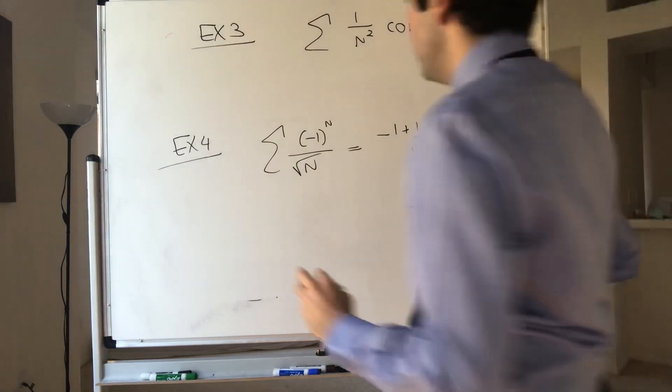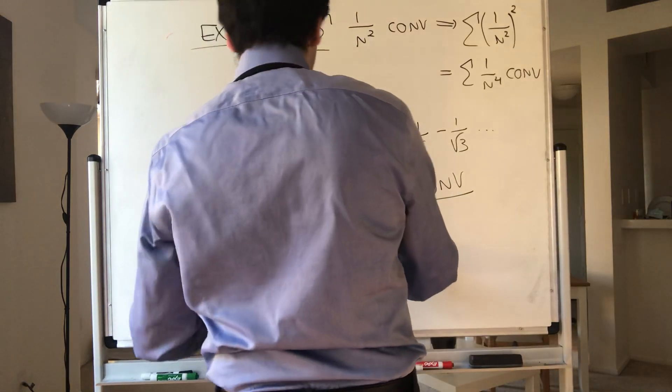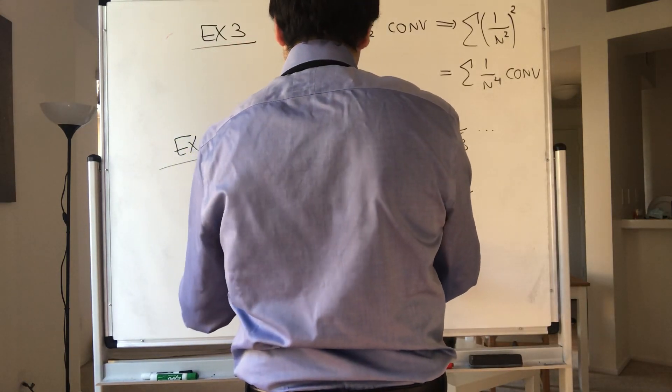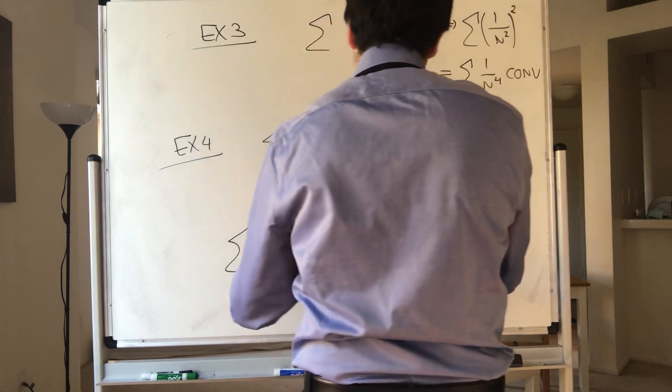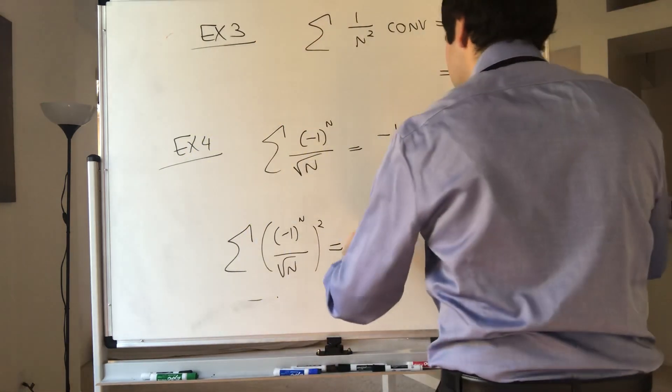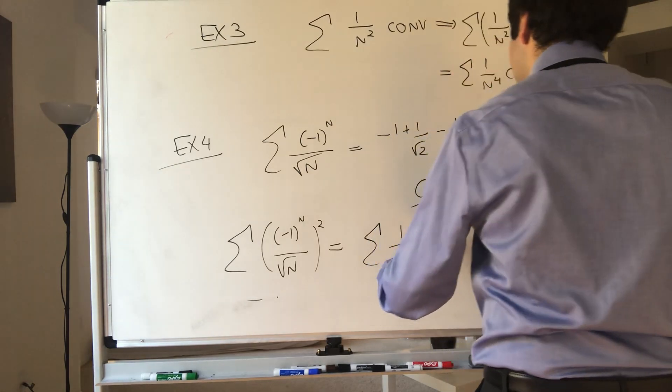However, what if we take the square here? One over square root of n squared, well that just becomes the one series, which diverges.